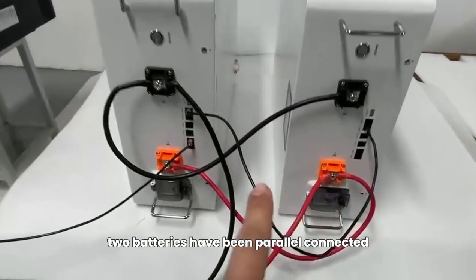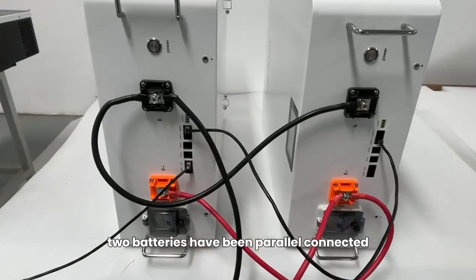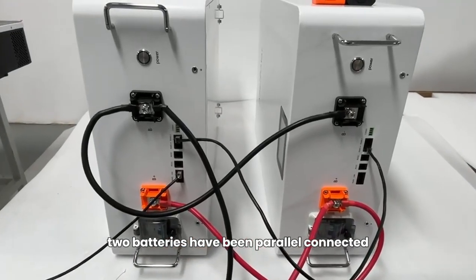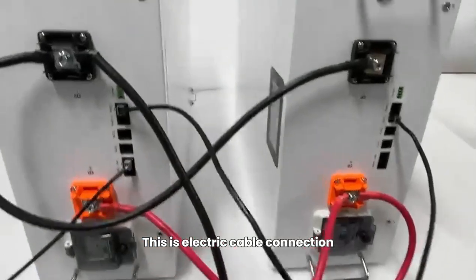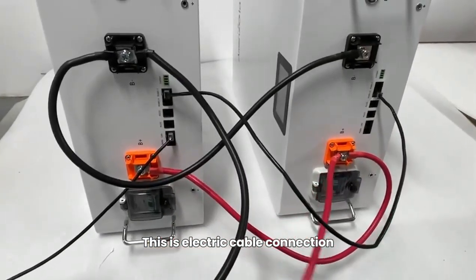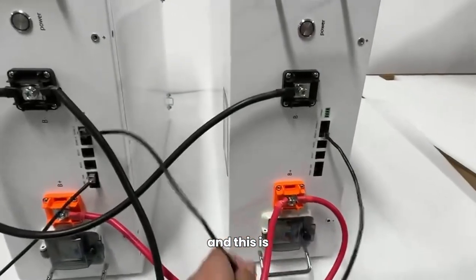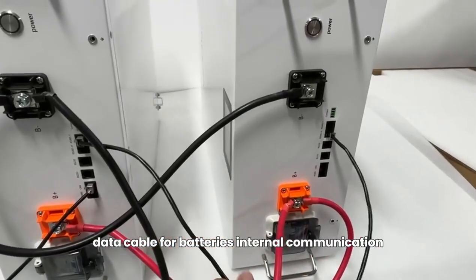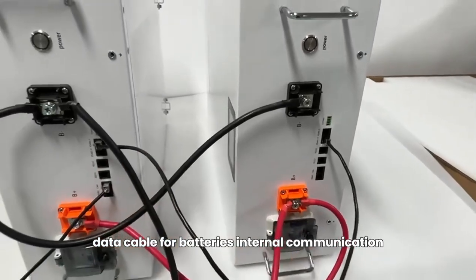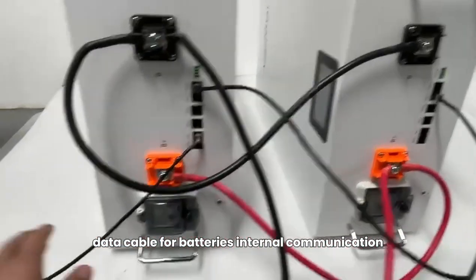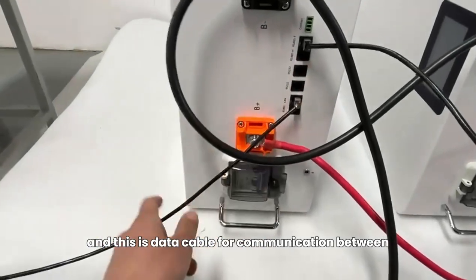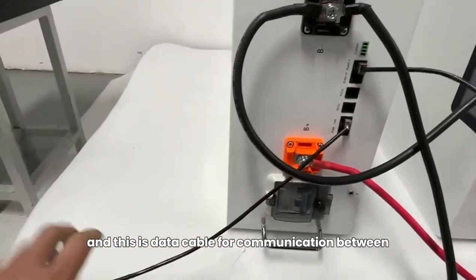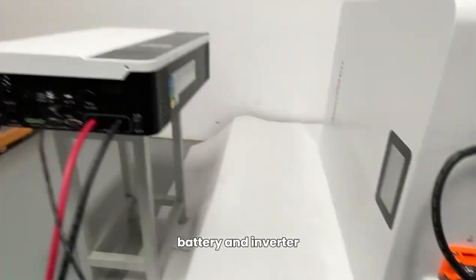The two batteries have been parallel connected. This is an electric cable connection and this is a data cable for batteries and internal communication. And this is data cable for communication between battery and inverter.